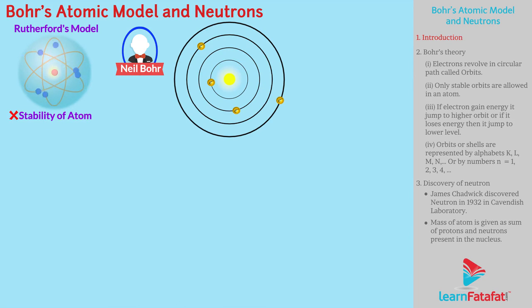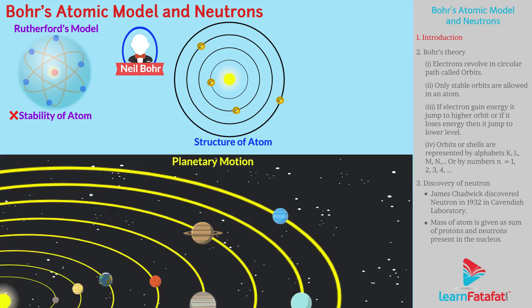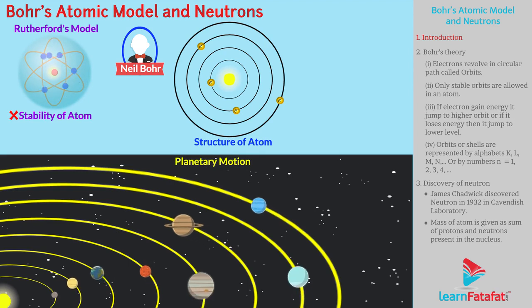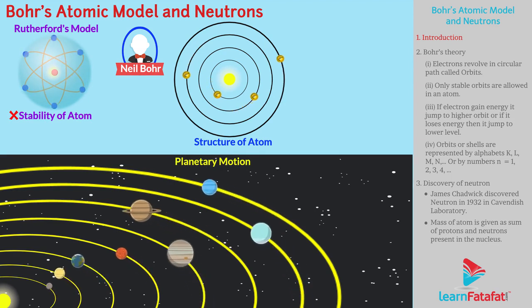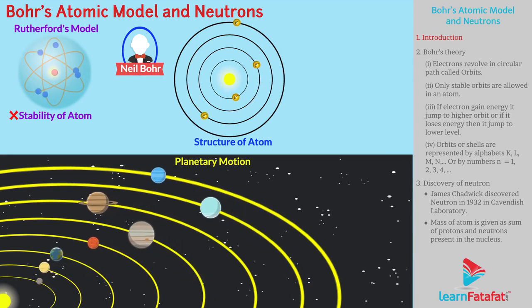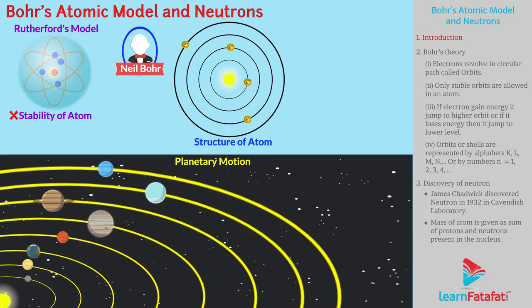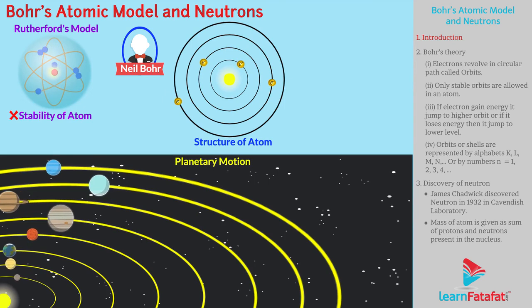Bohr compared the structure of atoms with planetary motion. As the planets revolve around the sun, electrons revolve around the nucleus.